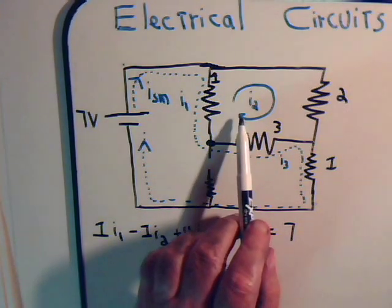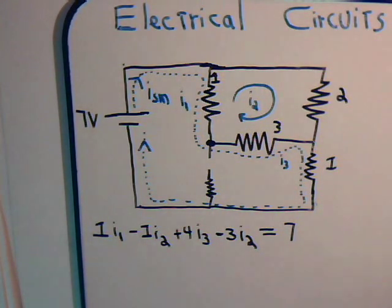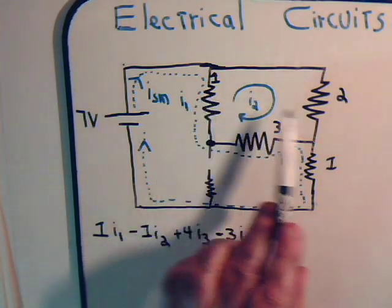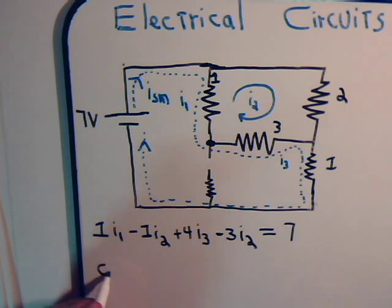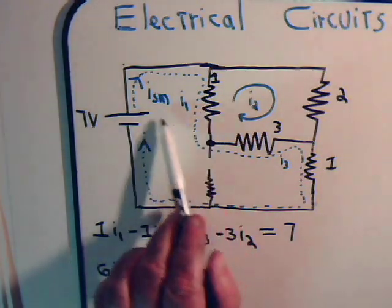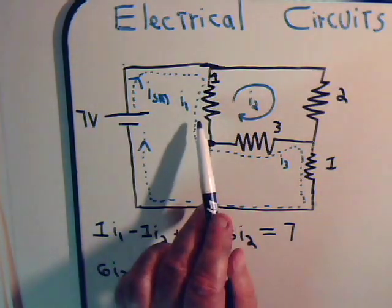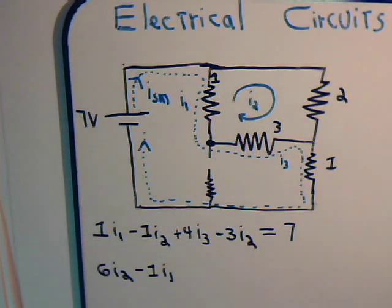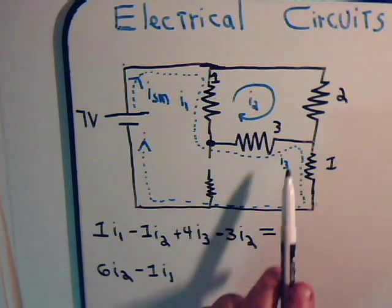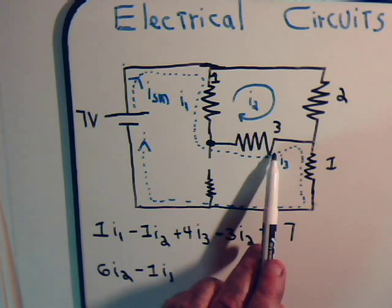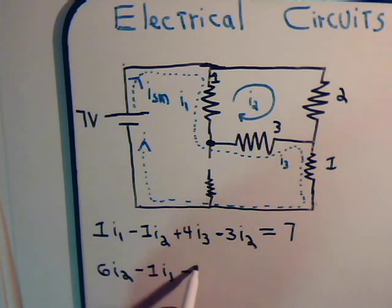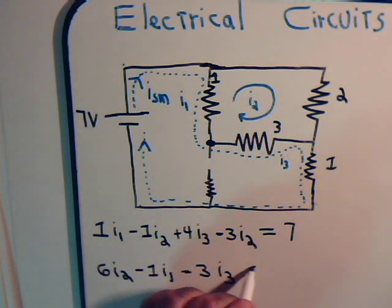Now for this loop, we have I2 times 3 plus 1 plus 2, so 6 I2. The super mesh current — this part consisting of I1 — so minus 1 times I1, because current I1 flows through this resistor in the opposite direction to I2. We also have this resistor where I3 flows opposite to I2, so minus 3 I3. There is no voltage source in this loop, so that equals 0.